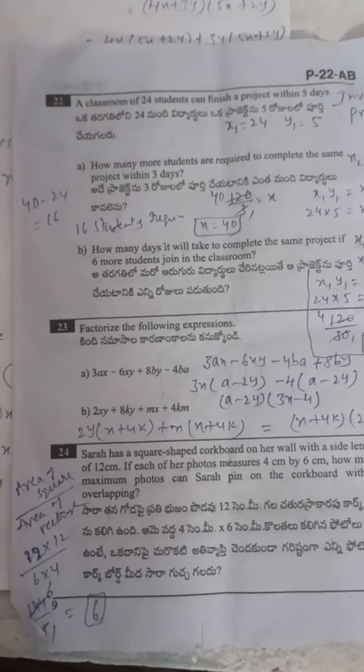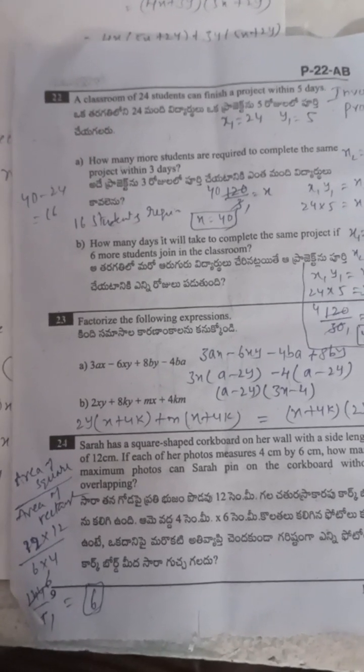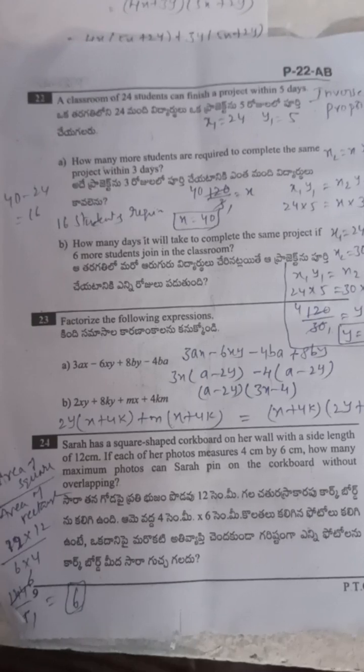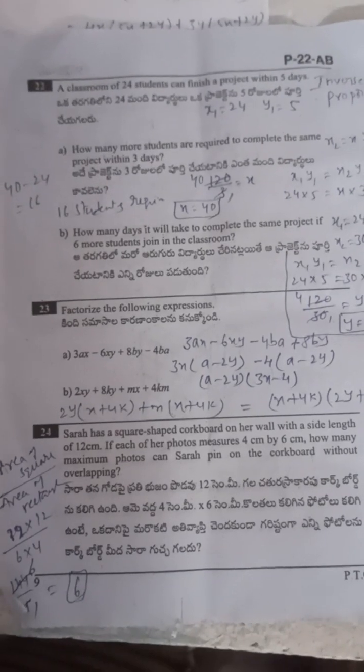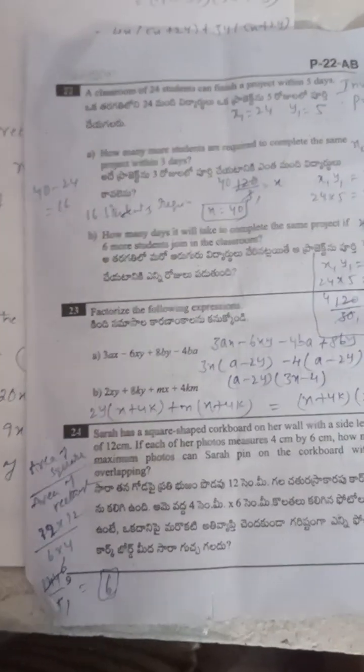Next: factorization of 2xy plus 8ky plus mk plus 4km. Grouping: (2xy plus 8ky) plus (mk plus 4km). Factoring each group gives (x plus 4k)(2y plus m) as the factored form.